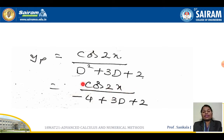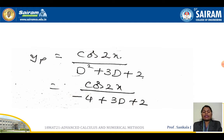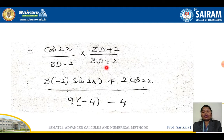Now for the particular integral: PI = cos 2x / (d² + 3d + 2). Replace only the places of d squared — a = 2, so d² is replaced by −2² = −4. The denominator becomes −4 + 3d + 2 = 3d − 2. Since there is still a d term remaining and we cannot replace d directly, we multiply and divide by the conjugate of the denominator: (3d + 2) / (3d + 2). So we get: (3d + 2) · cos 2x divided by (3d − 2)(3d + 2).